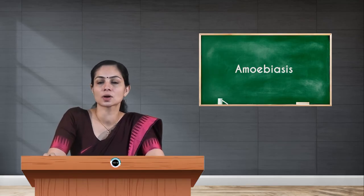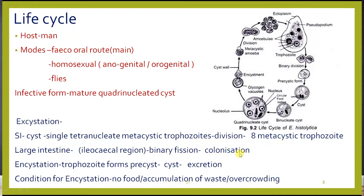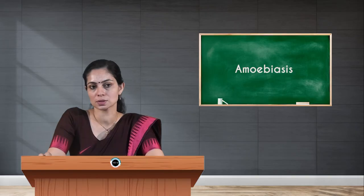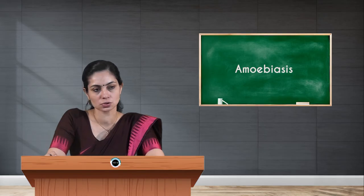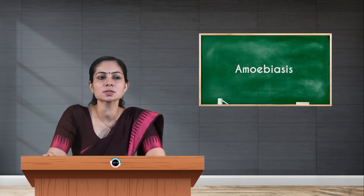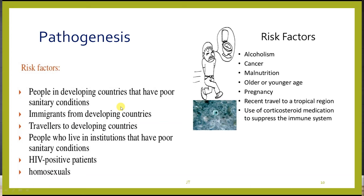Under certain conditions — such as lack of food, accumulation of waste, or overcrowding — encystation occurs. The trophozoites convert to cysts through the pre-cyst stage. These cysts are then excreted in human feces. The infective form is the tetranucleate cyst stage, which exits the human body through feces to complete the cycle.